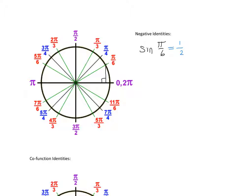But if I do the sine of negative pi over 6, I'm starting right here and going down pi over 6. It's just a reflection across the x-axis. It was positive 1 half, but now it's negative 1 half. So that demonstrates our first negative identity: the sine of negative theta, in degrees or radians, is equal to the opposite of the sine of theta.